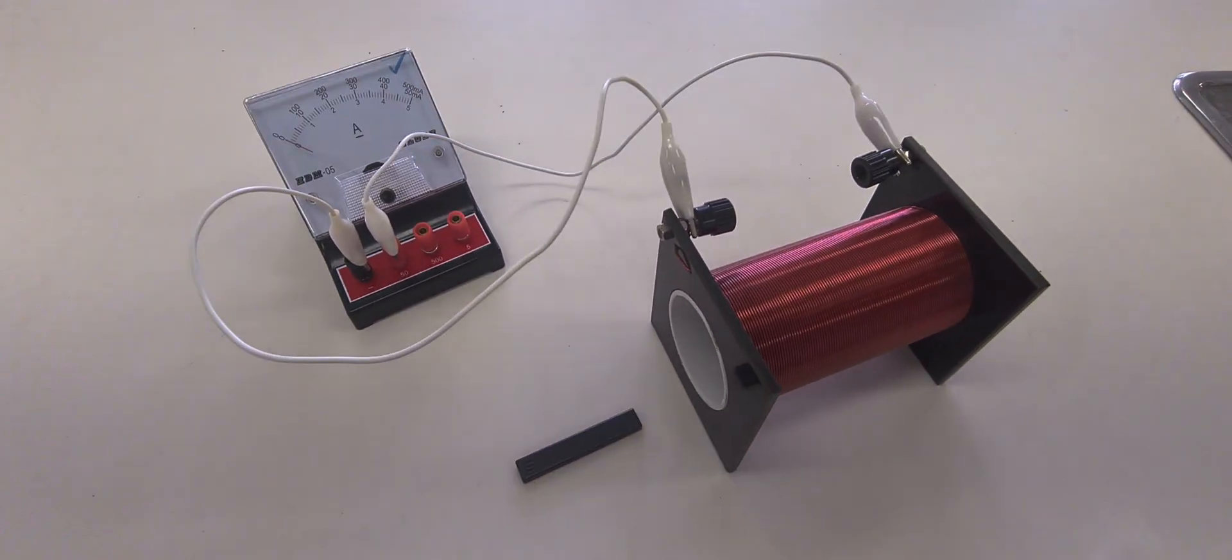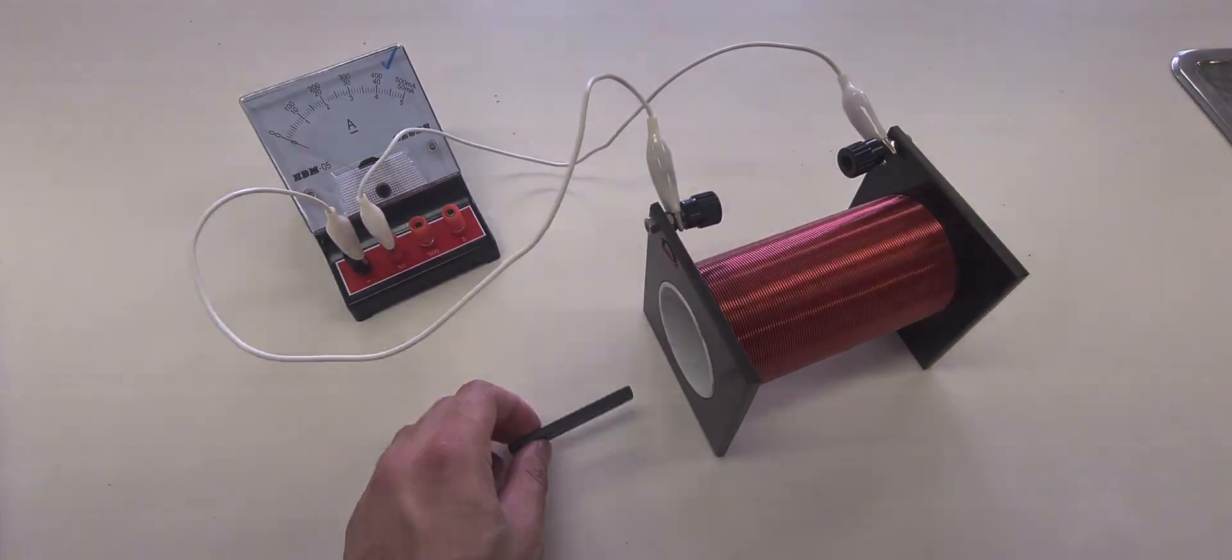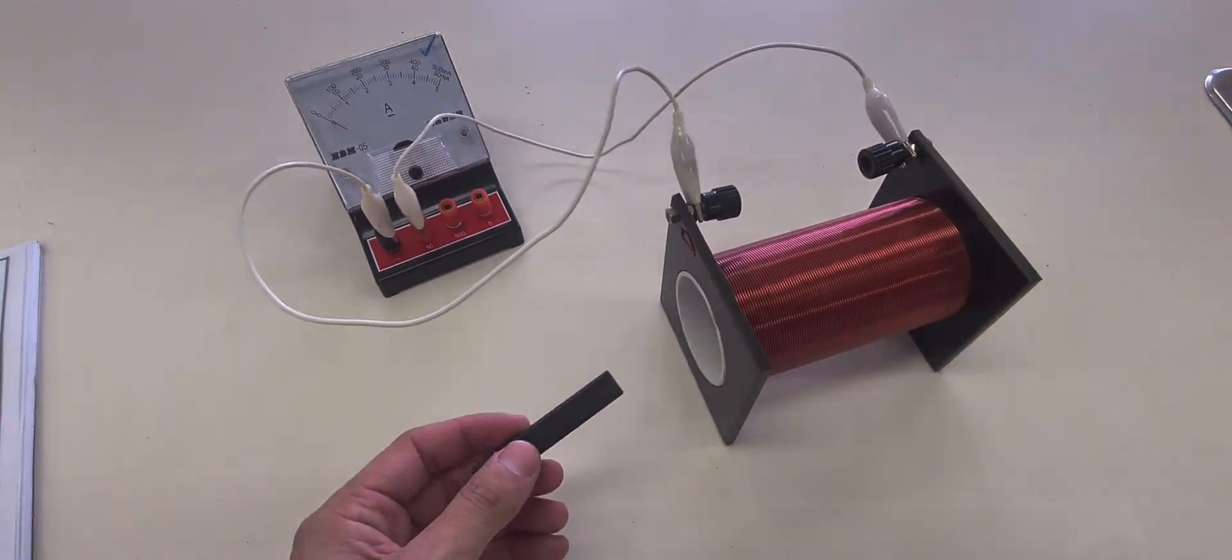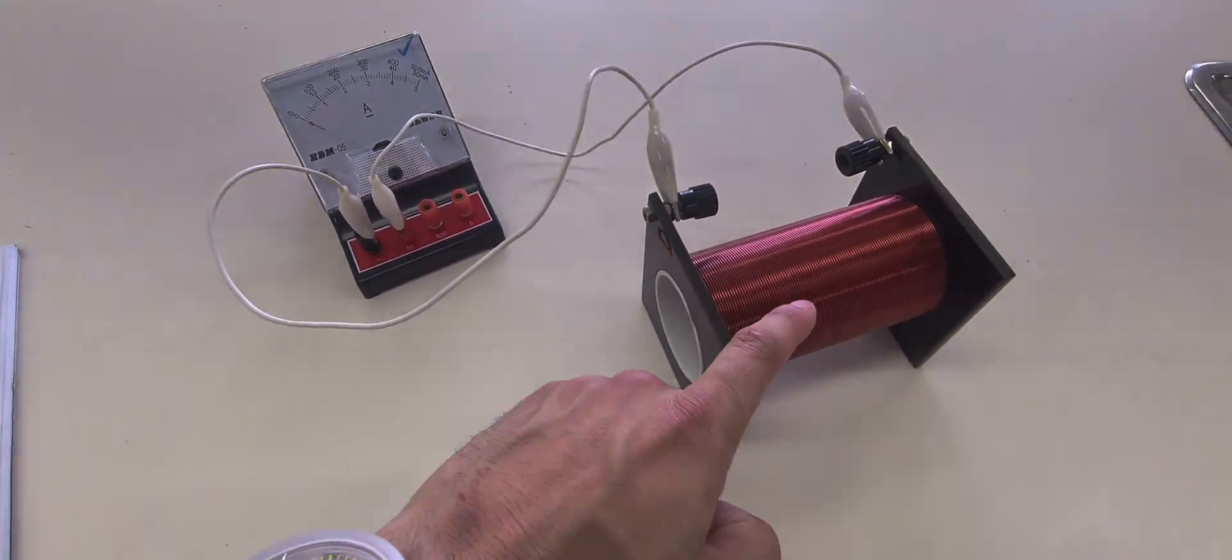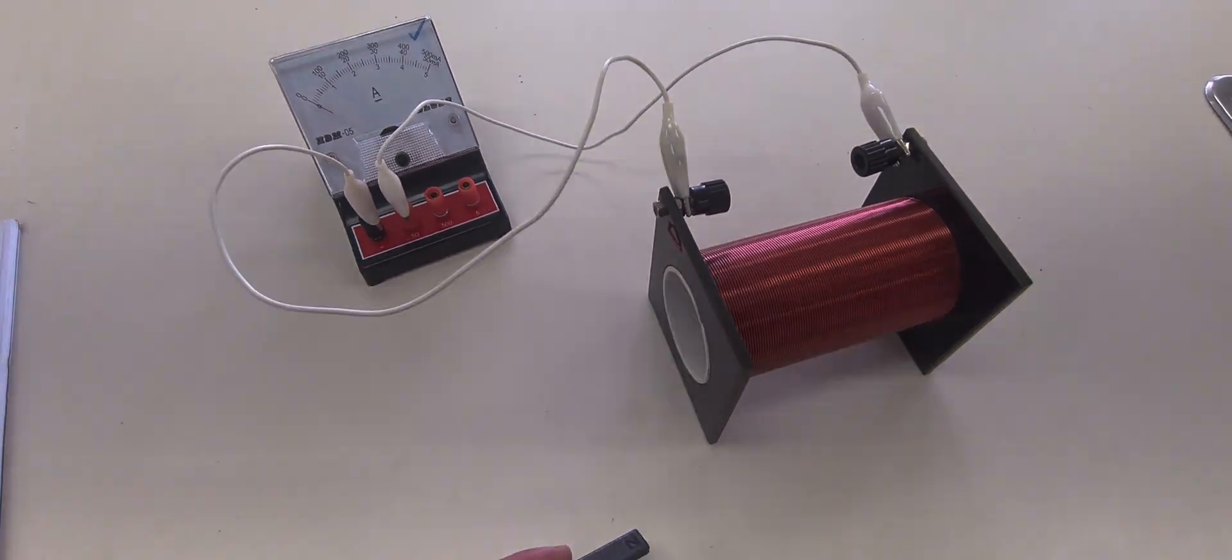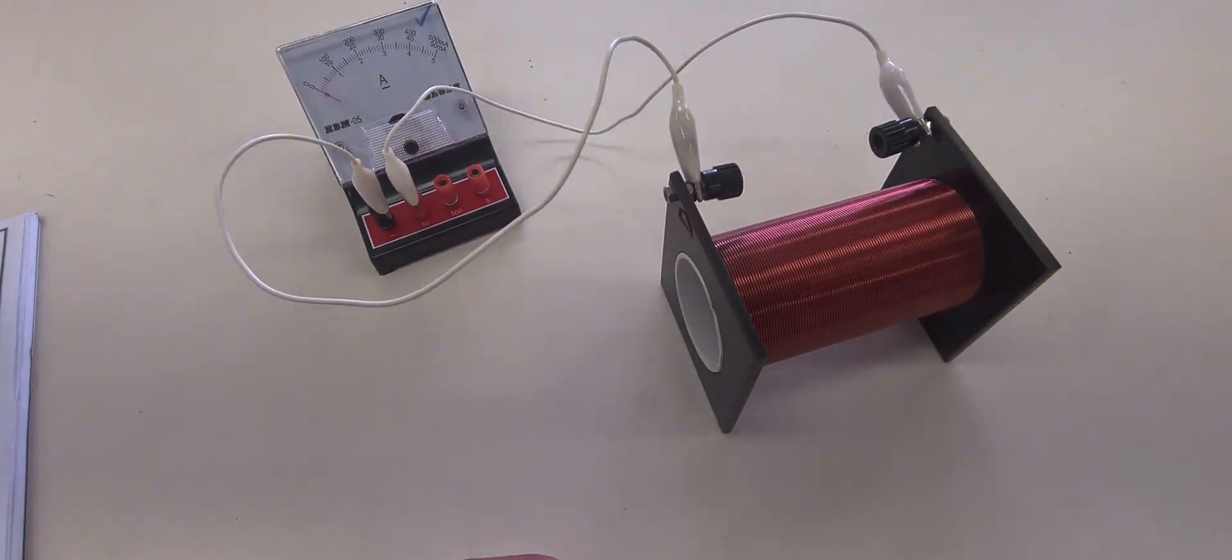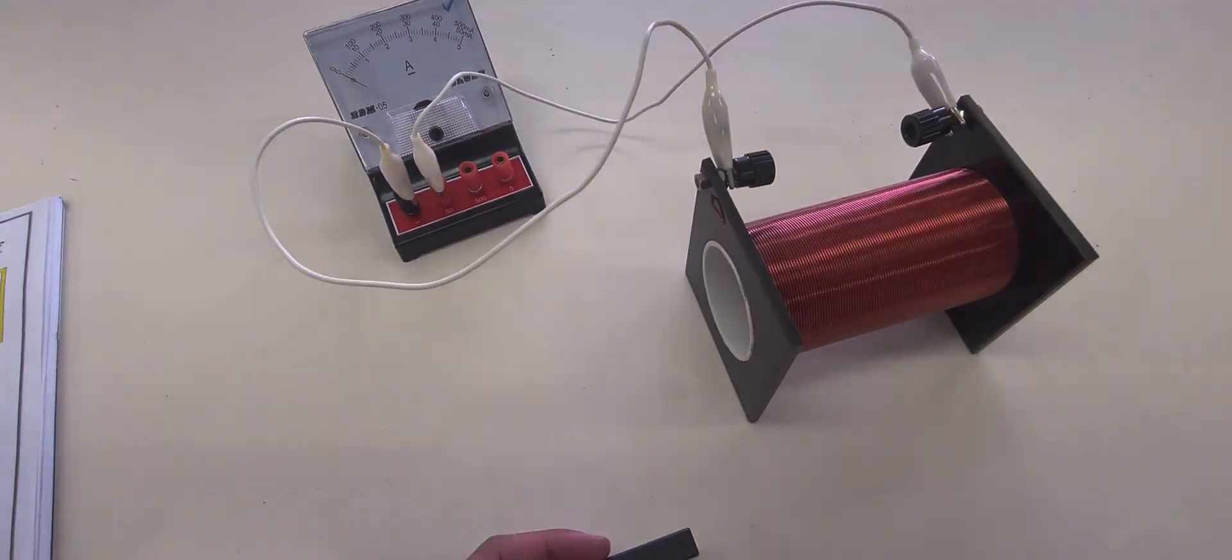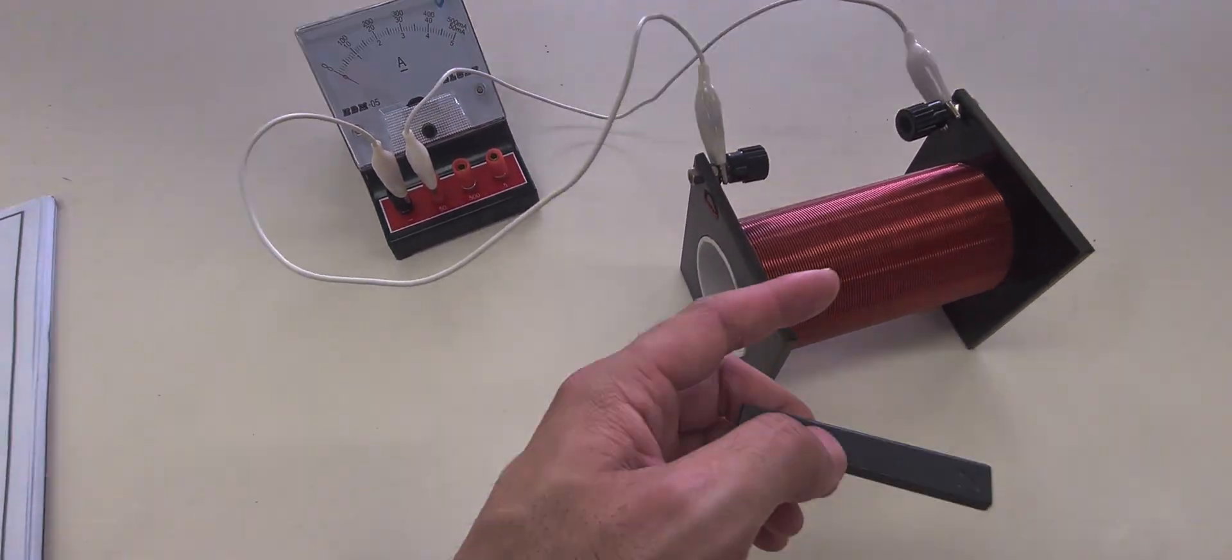He basically found that if a magnet, like a bar magnet, is quickly moved into a coil or a solenoid in this case, an electromotive force is induced. Electromotive force means the difference in potential that creates current, and you get current in the coil.